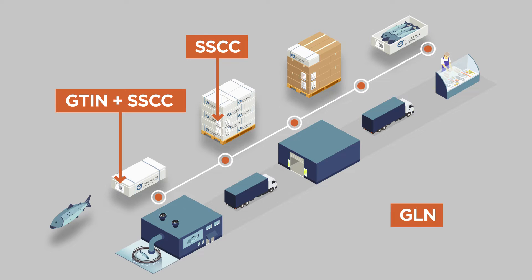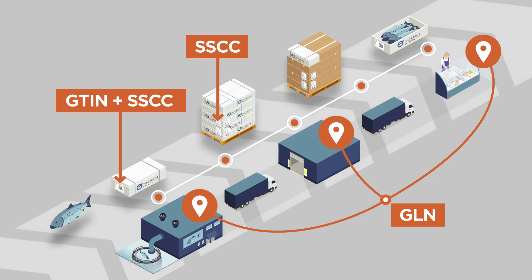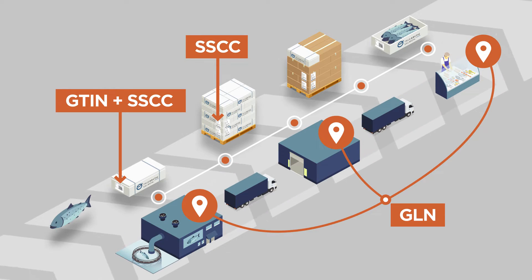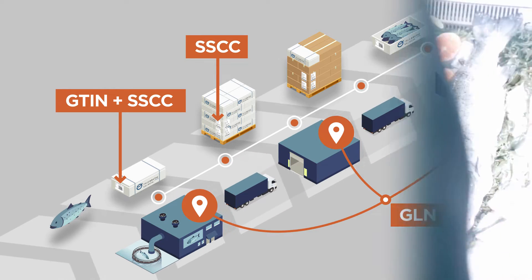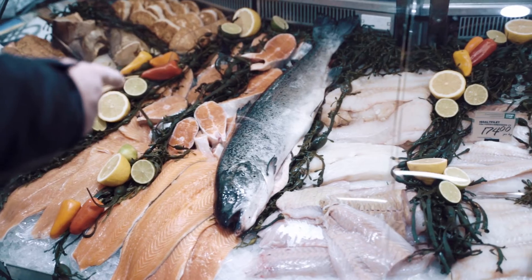In addition, GLN is used for identifying where the fish comes from, where it is shipped and where it is sold. By using GS1 standards, the salmon can be traced through the entire supply chain, all the way to the consumer.